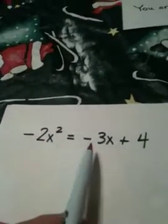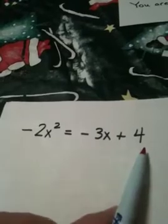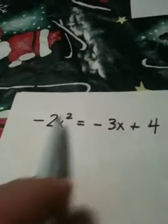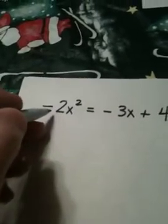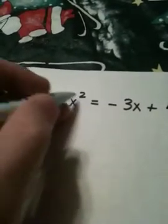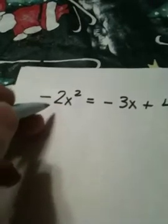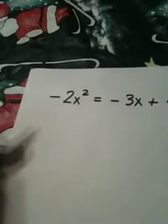Opposite of 2x squared equals the opposite of 3x plus 4. I need to put this in standard form. The easiest way to do that, and to also make the leading coefficient positive, is to add 2x squared to both sides.